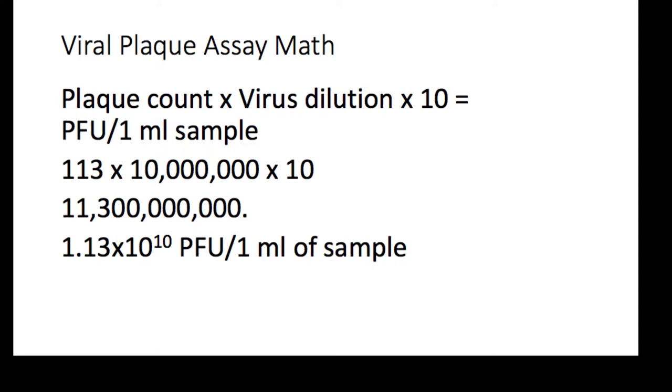We want to know how many plaques are in one mill of the sample, not how many are in a tenth of a mill. So, we need to multiply by 10. Since we took out a tenth of a mill, and we want to know how much is in one mill, we need to multiply by 10.